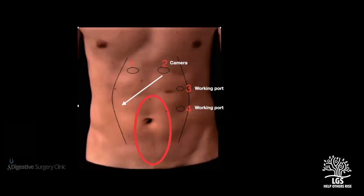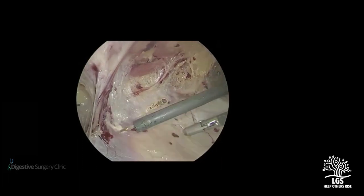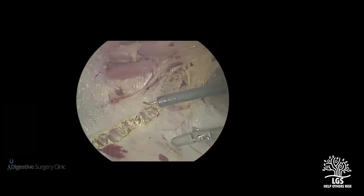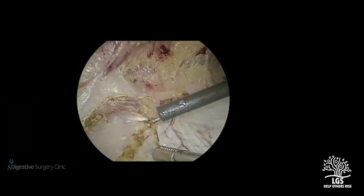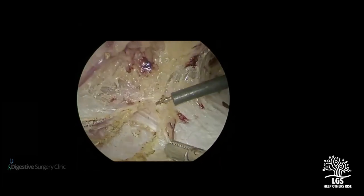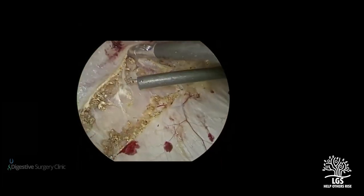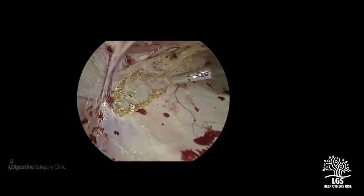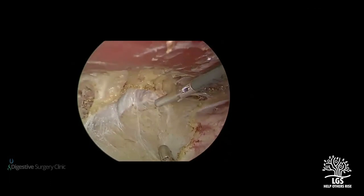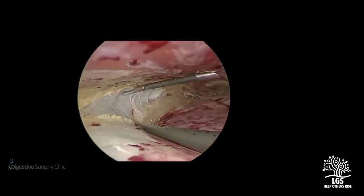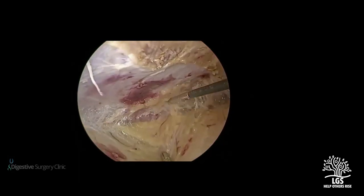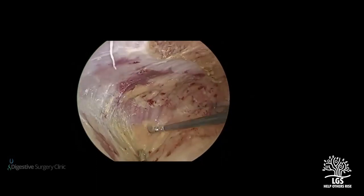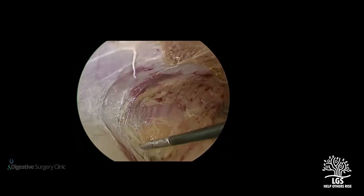Now we have the defect to close — but it will not close without tension unless we do component separation. Since we are already in the retro-rectus space, this is where we do posterior component separation (TAR). We can see the neurovascular bundles laterally; we divide the posterior lamina of internal oblique and then cut the transversus abdominis muscles (noting the transverse arrangement of fibers). Once done, there is medialization. Note that below this level the transversus abdominis becomes aponeurotic. We then develop the plane better — pushing the transversus abdominis muscle upward and keeping the fascia transversalis below, medializing the rectus myofascial complex for tension-free closure.